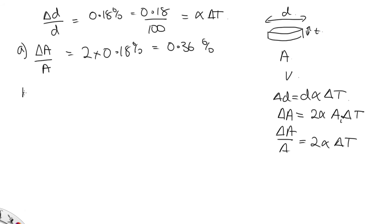OK, in part B, we were asked about the thickness of the coin. The thickness is just a one-dimensional thing, so the thickness change will be the same as the diameter's change. The delta t over t will equal delta d over d, which will be alpha delta t, which is 0.18%.